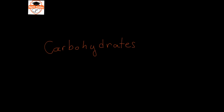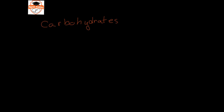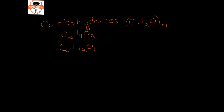In this video, we're going to discuss carbohydrates. Carbohydrates are compounds with the chemical formula of CH2O to some number. We might have C2H4O2 or C6H12O6 — these would be examples of carbohydrates.